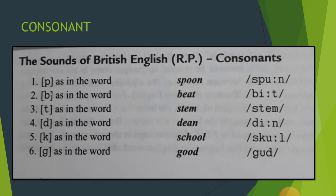In the 24 consonants, the first consonant is [p]. Iska symbol hai small p, aur inko do square brackets ke beech mein rakha gaya hai. [p] as in the word 'spoon'. Agar hum 'spoon' word ka uccharan karte hain, toh isme jo [p] sound hai usko small p ke dwara represent kiya gaya hai. Yeh pehla consonant symbol hai. Second hai [b] as in the word 'beat'.